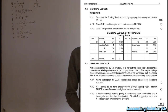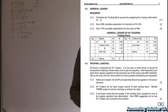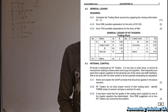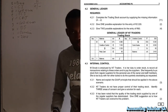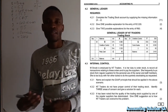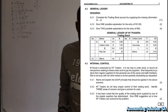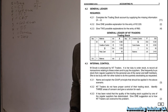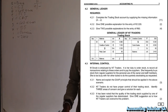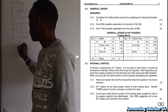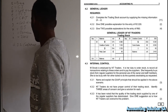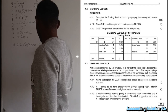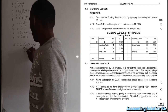Question 4.2.2 asks us to explain one possible reason for the entry of 2220. If you check, it is for the debtors allowance journal. A customer has returned goods — the possible reason is that the customer was not happy with the goods that were purchased, which is why the customer decided to return them.